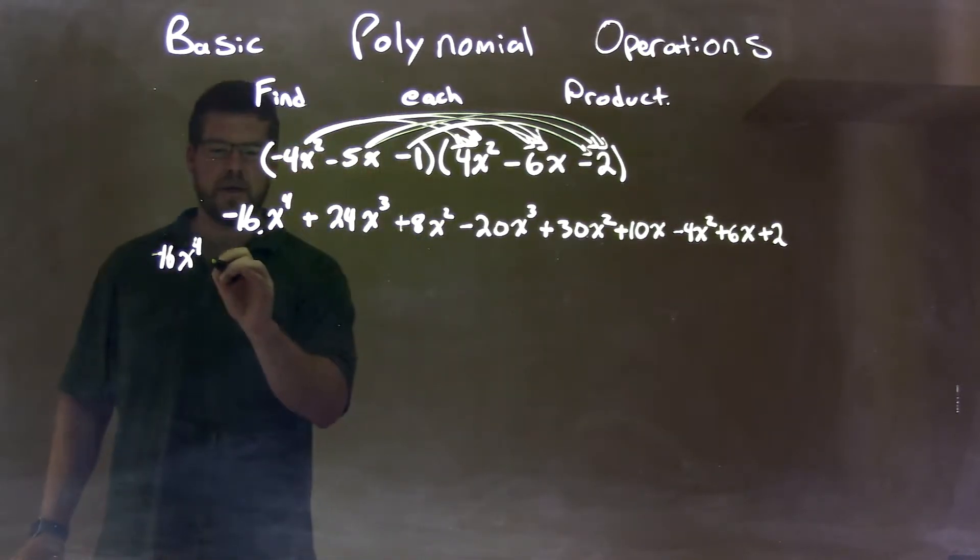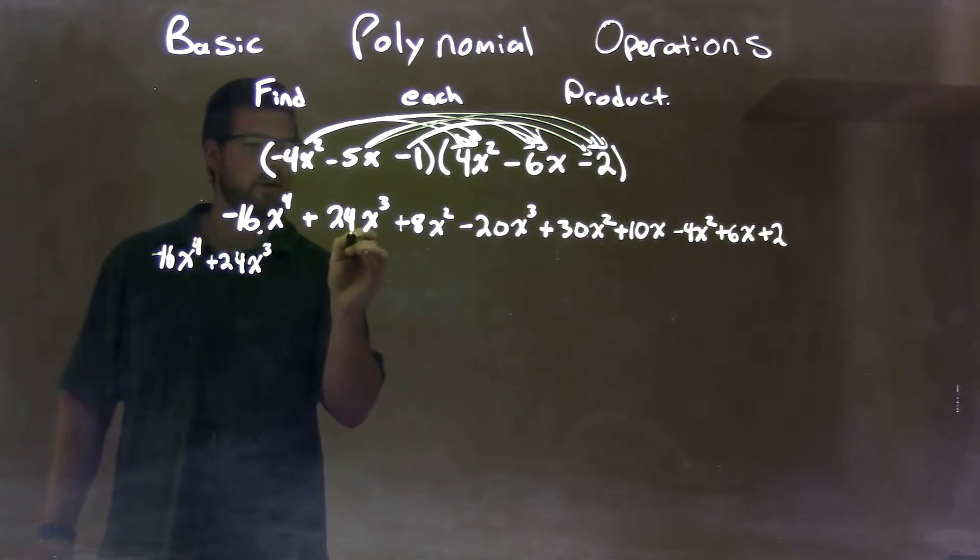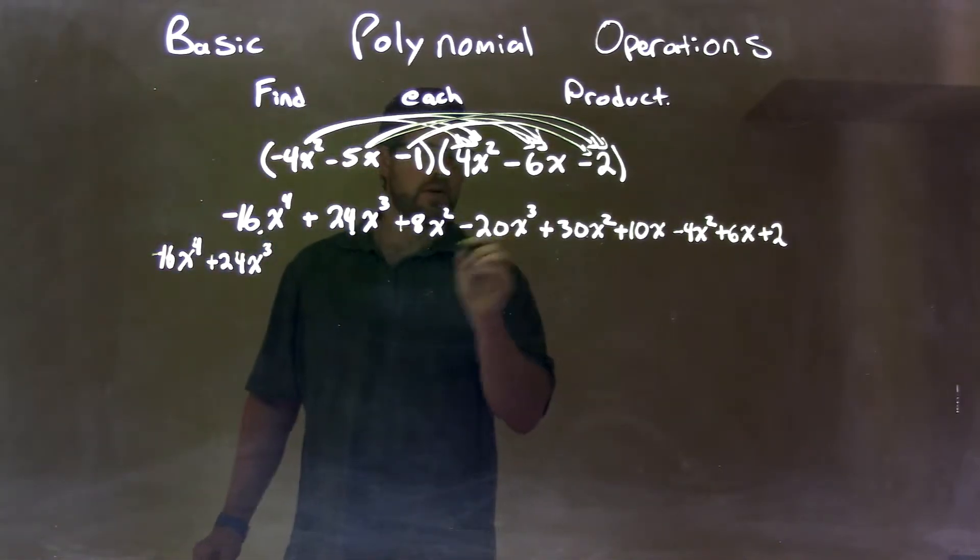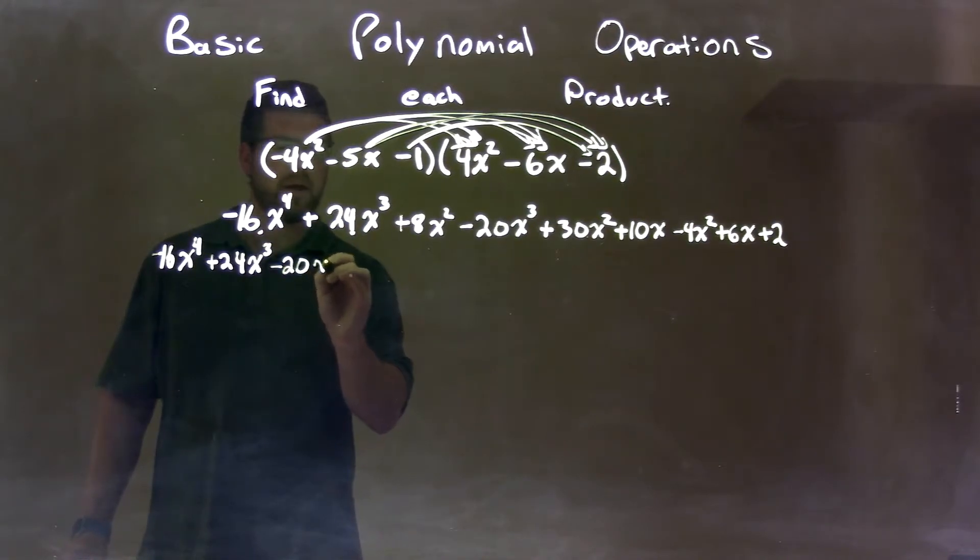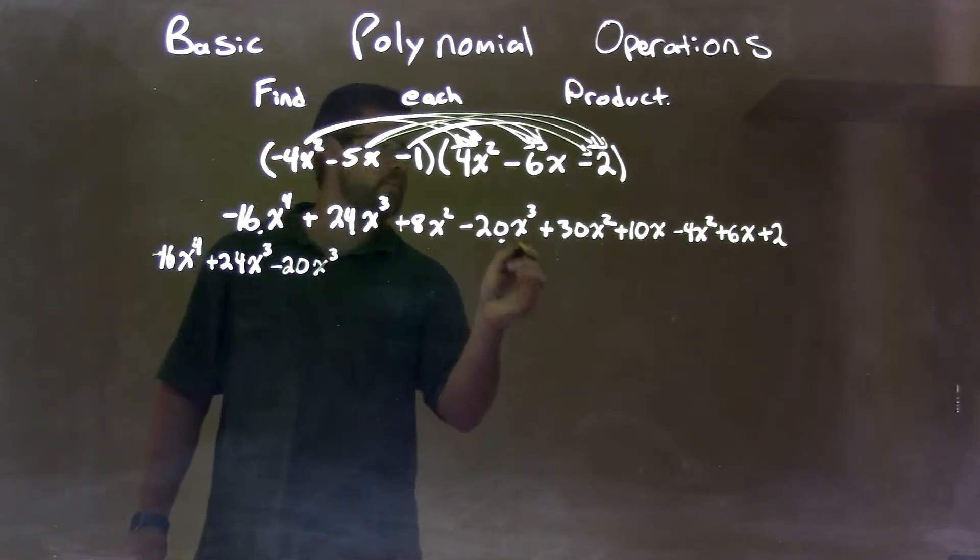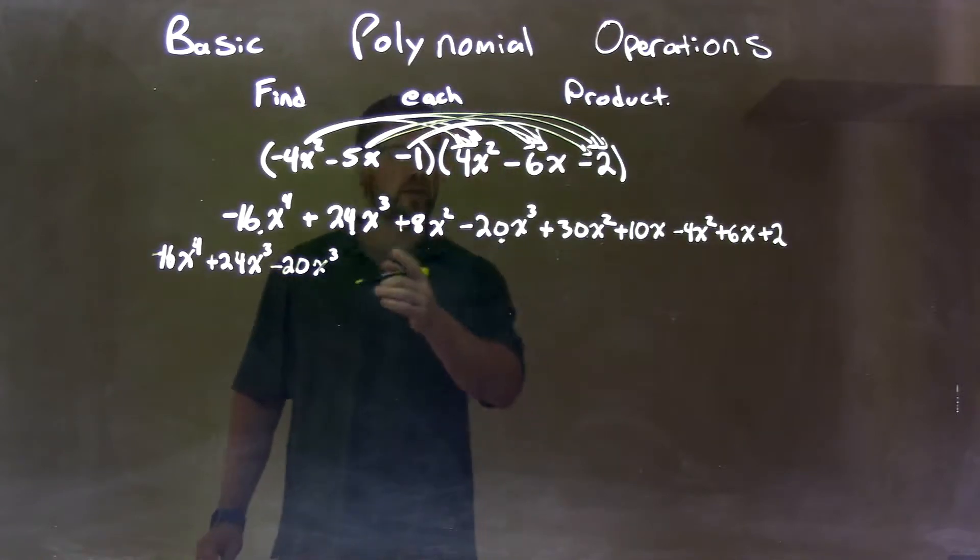Now, the third degree. So let's bring them down. Plus 24x to the third. I brought that down. And the next x to the third here is minus 20x to the third. And then, that's it for the x to the third.